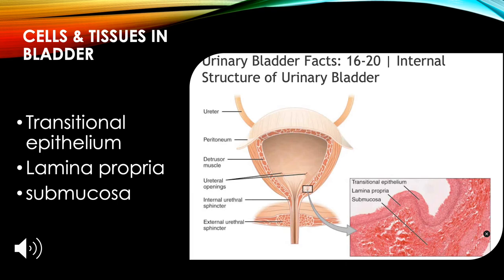In the bladder you can see the transitional epithelium on the outer part, the lamina propria in the middle, and the submucosa in the inner lining of the bladder.